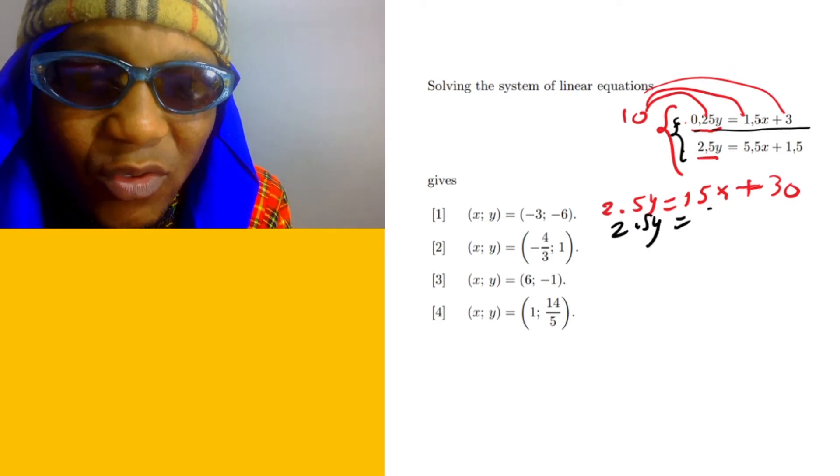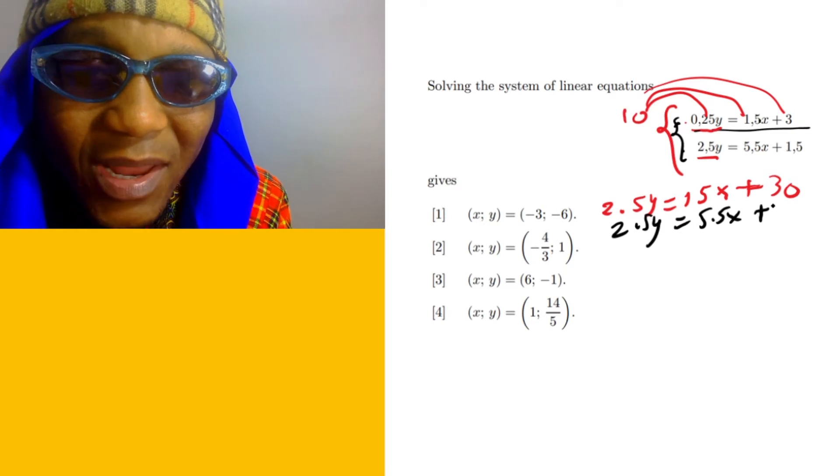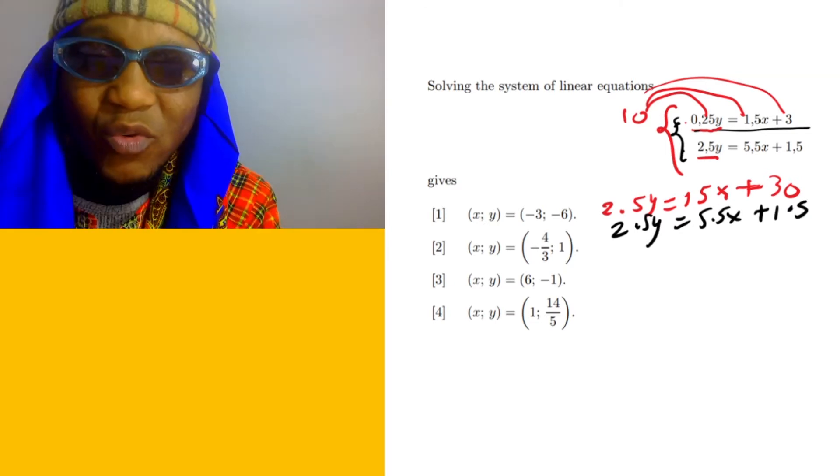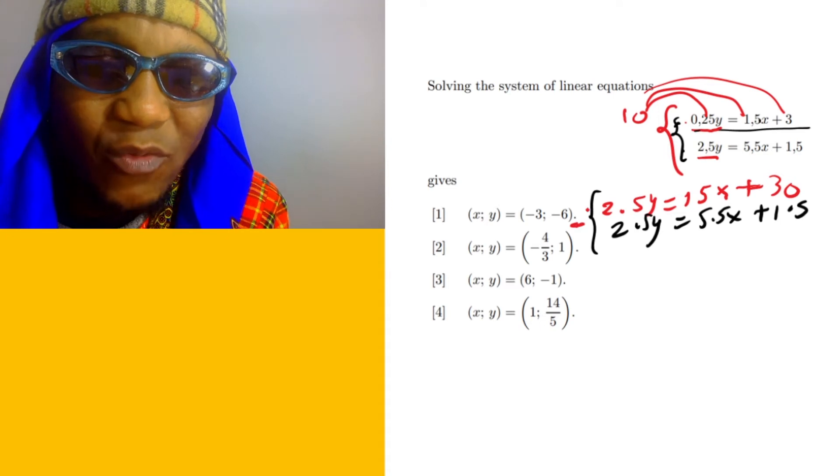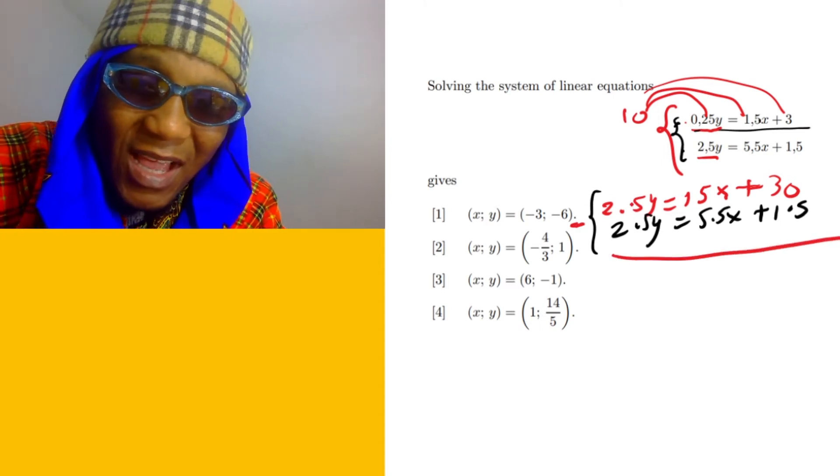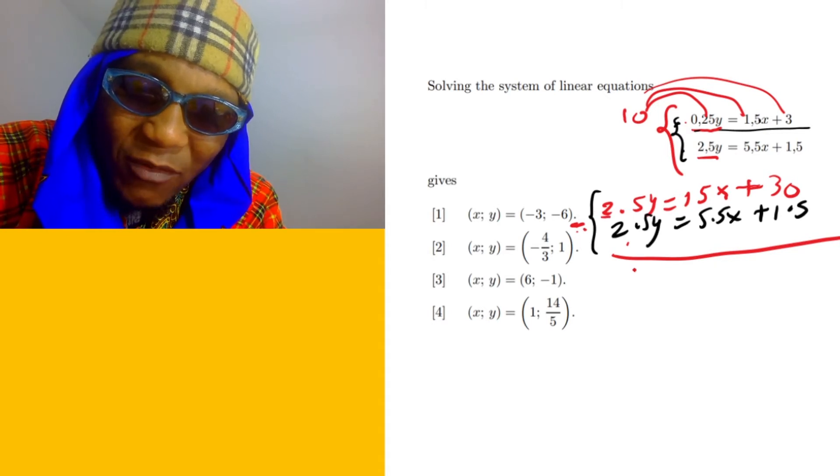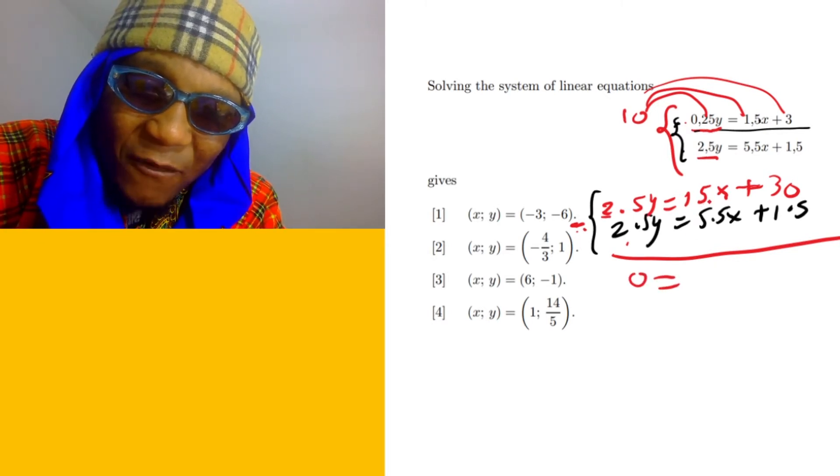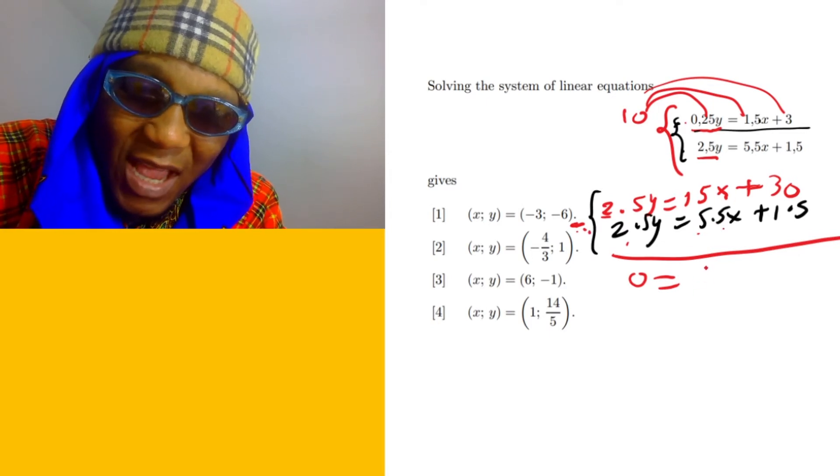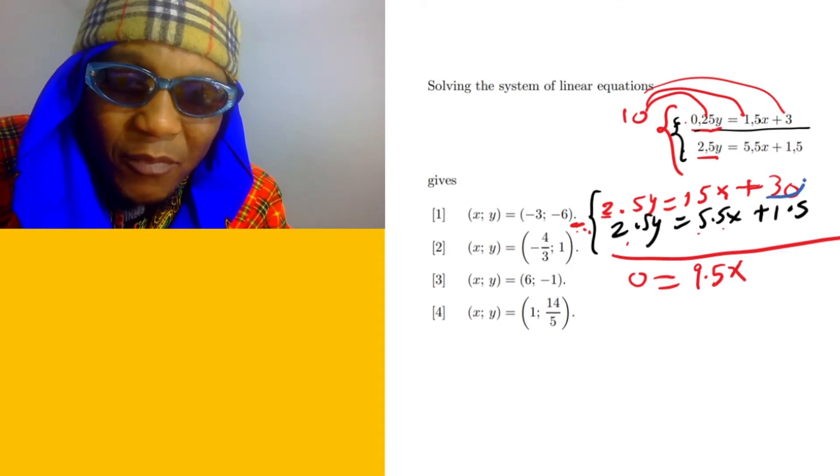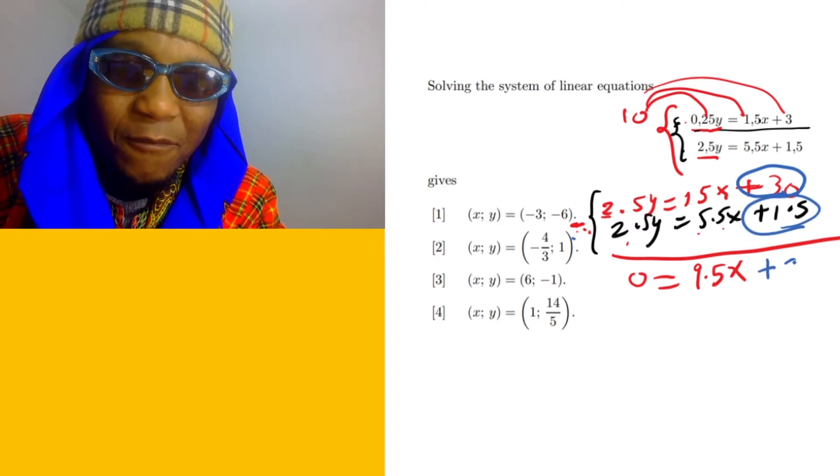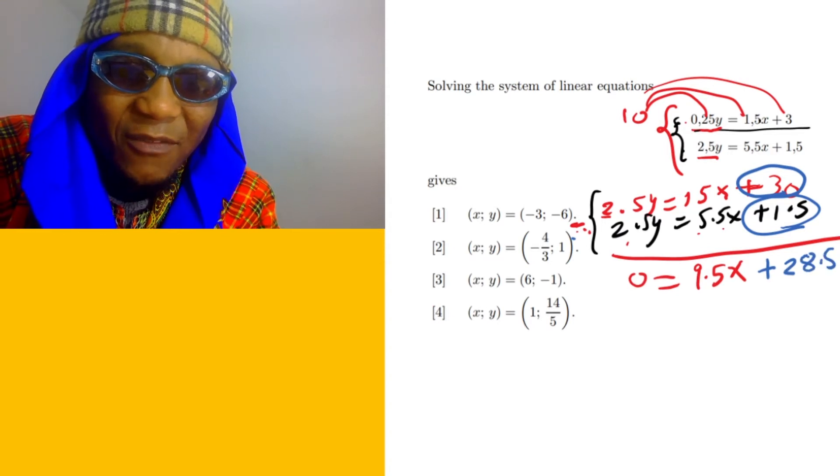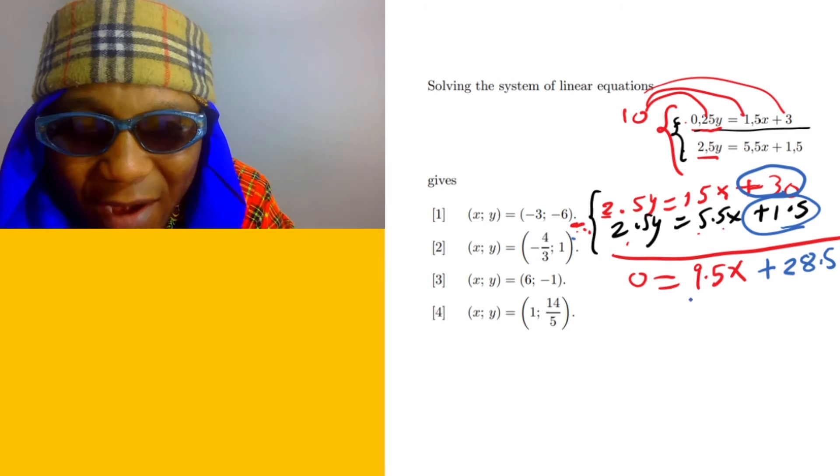What we're gonna do here is eliminate. You're gonna put y minus y. We're gonna put minus here because 2.5 minus 2.5 is gonna give us 0. Now for the second one: 15 minus 5.5 is gonna give us 9.5x. For the last one, positive 30 minus positive 1.5, which is gonna give us positive 28.5. What we're gonna do is take one over because we want to get a value of x.